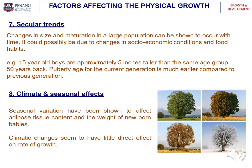Then, secular trends. Changes in size and maturation in a large population can be shown to occur with time, possibly due to changes in socio-economic conditions and food habits. For example, a 15-year-old boy today is approximately five inches taller than the same age group 50 years ago, and puberty age for the current generation is much earlier compared to the previous generation. The next factor is climate and seasonal effects. Seasonal variation has been shown to affect adipose tissue content and the weight of newborn babies, while climatic changes seem to have little direct effect on the rate of growth.